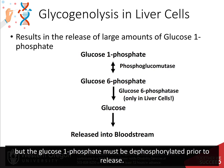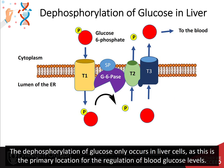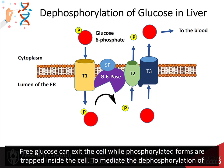The glucose-1-phosphate must be dephosphorylated prior to release. The dephosphorylation of glucose only occurs in liver cells, as this is the primary location for the regulation of blood glucose levels. Free glucose can exit the cell, while phosphorylated forms are trapped inside the cell.